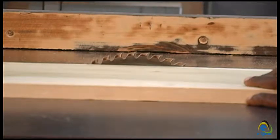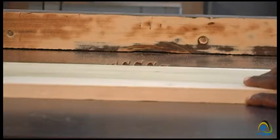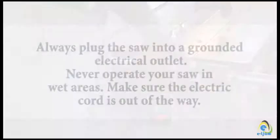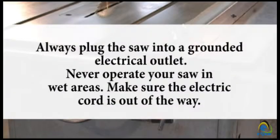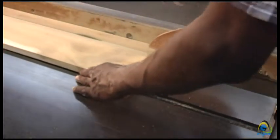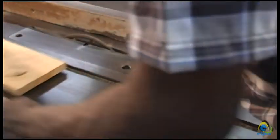Set the saw blade at no less than 3 mm, but usually not greater than 10 mm, above the workpiece. Lock the fence for ripping. Always plug the saw into a grounded electrical outlet. Never operate your saw in wet areas. Make sure the electrical cord is out of the way. Keep your hands away from the blade and use a push stick — this reduces the chance of a serious accident.